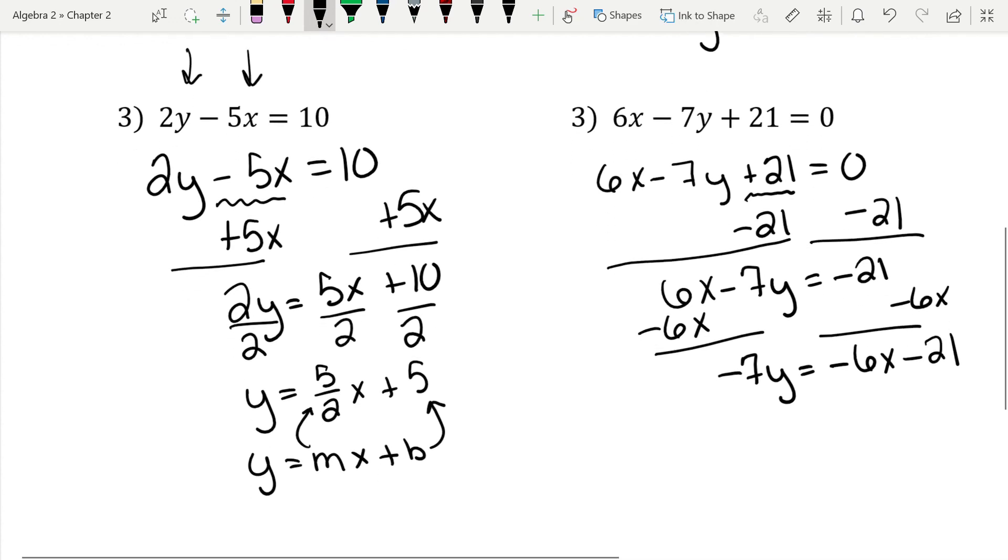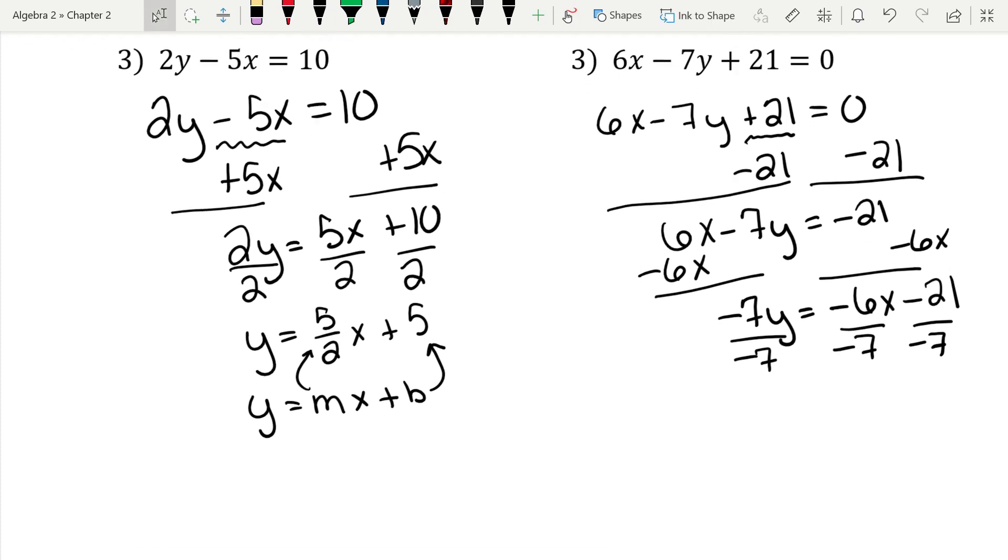But we're not done because we don't have y by itself. I'm going to divide everything by negative 7. All right. Now remember, a negative divided by a negative is a positive. So we'll have y equals 6 sevenths doesn't reduce. But once again, a negative divided by a negative is a positive. So we'll have 6 sevenths x. And then negative 21 divided by negative 7 is a positive 3.